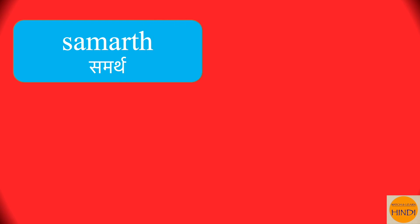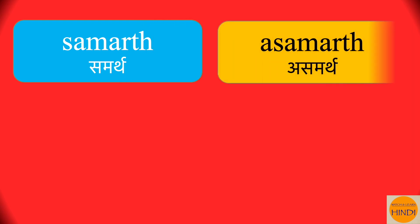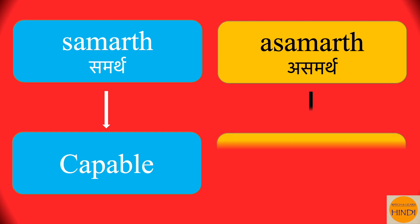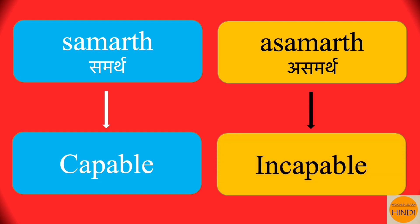Next is samart. Add an 'A' to it and you get asamart. Samart is capable, so asamart is incapable. Samart. Asamart.